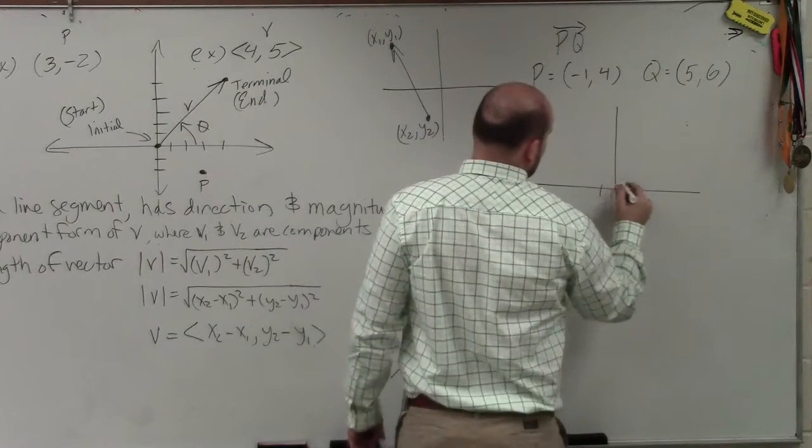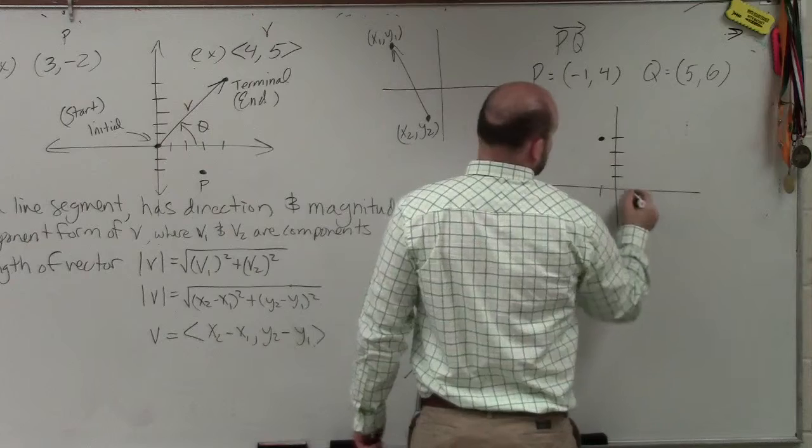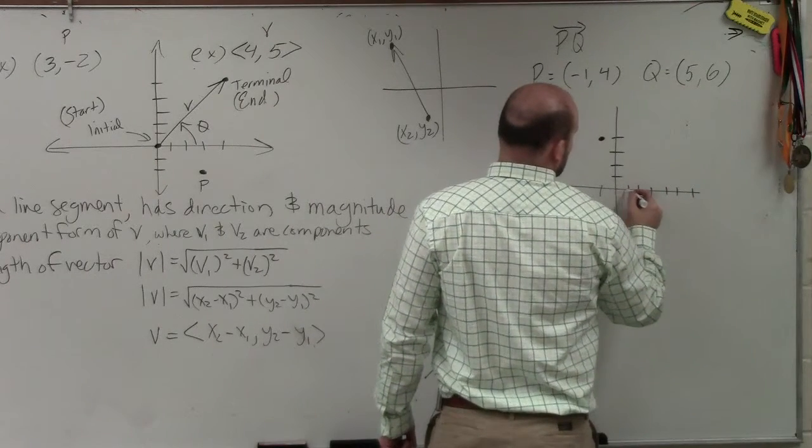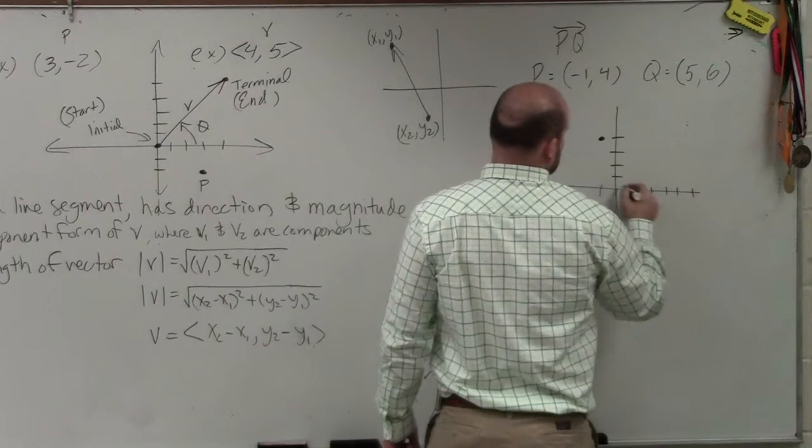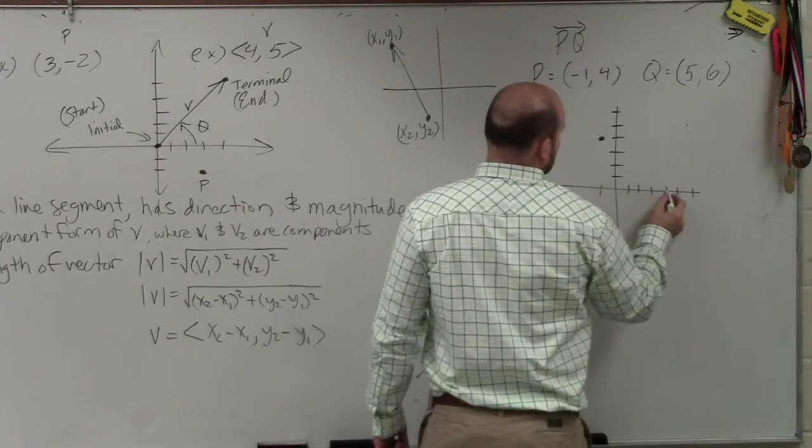Well, if I was going to plot this point, negative 1, up 1, 2, 3, 4, and then 5, 6. Or so over 5, 1, 2, 3, 4, 5, and then up 6.